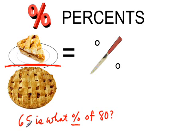65 being the part, that's the slice, and 80 being the whole. So we'll divide 65 by 80.